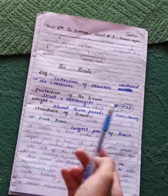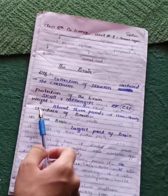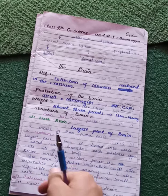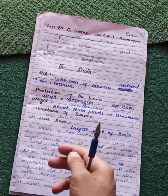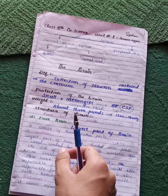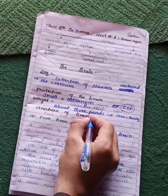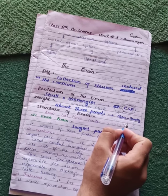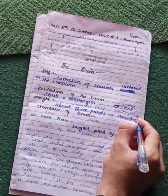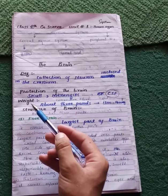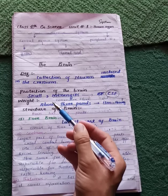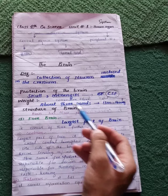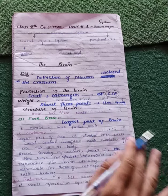The brain is also protected by cerebrospinal fluid. So the brain's protection comes from the meninges and the cerebrospinal fluid. Regarding brain weight, in an adult human being, the brain weighs approximately three pounds, which is about 1.3 to 1.4 kilograms.